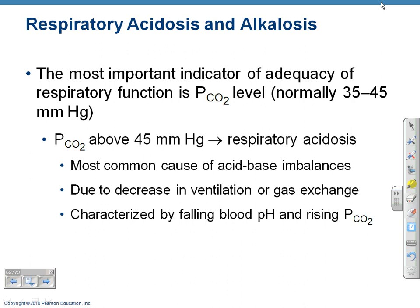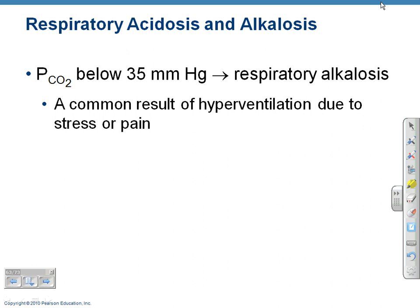Respiratory acidosis is characterized by falling blood pH and rising CO2 levels. If you have too much CO2 in your blood, that is respiratory acidosis. If CO2 drops too low, it causes respiratory alkalosis. Hyperventilation causes respiratory alkalosis because too much CO2 is released. What do you do to relieve that? Breathe into a bag — you get CO2 back into your system, it lowers the pH back to normal.